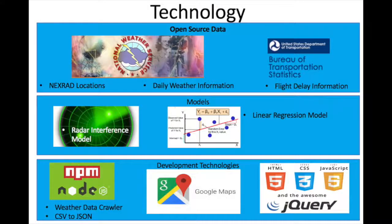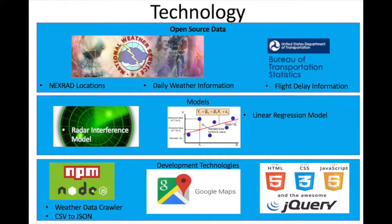To help us develop our software, we make use of these key technologies. Our key source of data comes from web services provided by the National Weather Service and Bureau of Transportation Statistics. We then developed models for both the radar interference engine, and we intend to make use of a linear regression model for the analytics and prediction of flight delays.